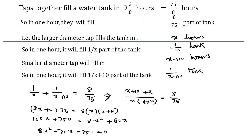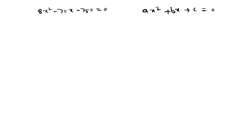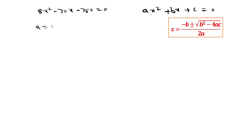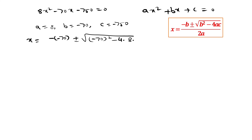What remains is to solve this quadratic equation using the quadratic formula. Here a is equal to 8, b is equal to minus 70, and c is equal to minus 750. Substituting in the formula, we get x is equal to minus b, that is minus (minus 70), plus or minus under root of b squared — that is (minus 70) whole squared — minus 4 times a (that is 8) times c (that is minus 750).